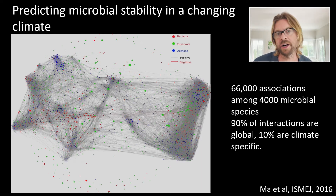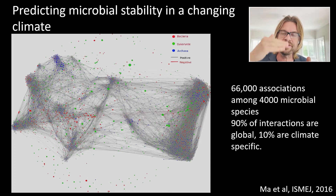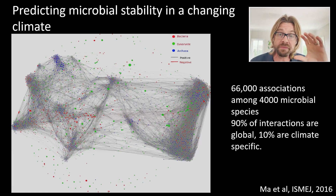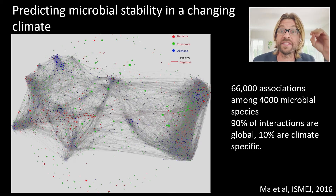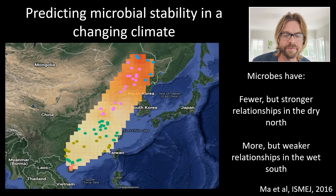However, 10% of those associations are climate-specific. If you dig down into the different climate zones, you find these unique associations. So if the climate shifts and that zone shifts, you're likely to see those climate-specific associations changing first. Identifying what those are and using that effectively is going to be key.